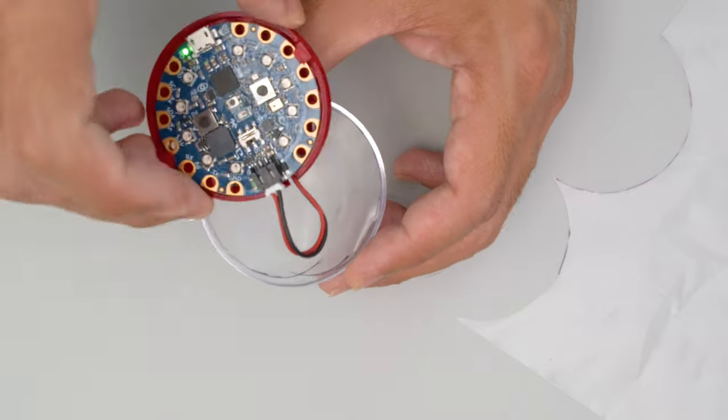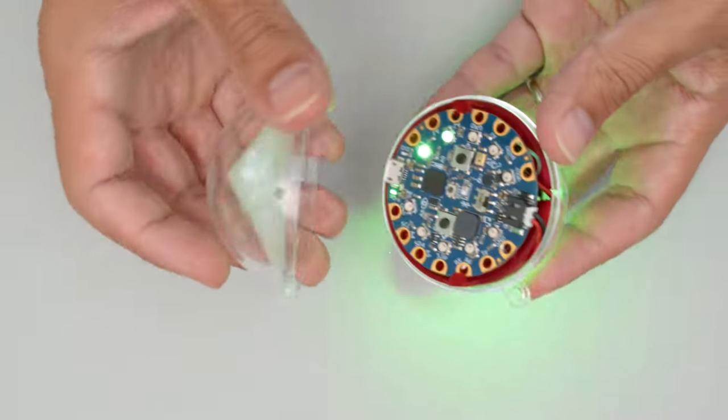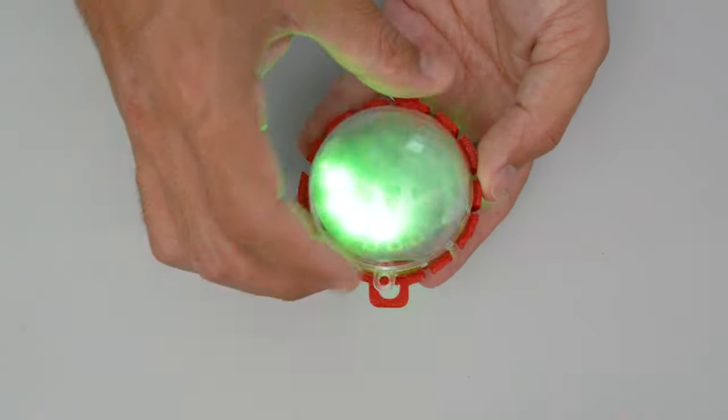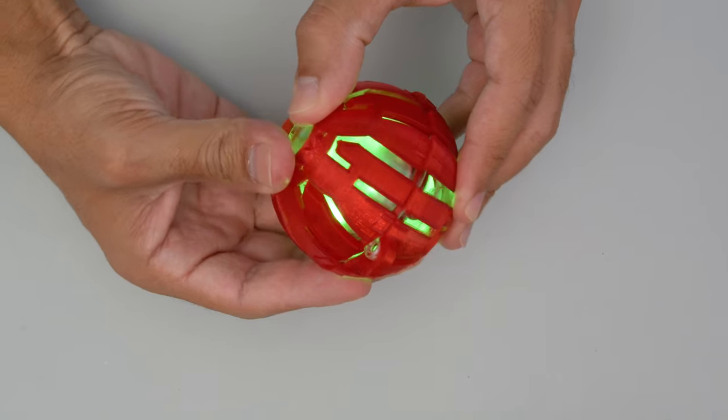Diffusion material like parchment paper is added to the DIY ornament so the NeoPixel LEDs are nicely diffused. The DIY ornament is fitted into the 3D printed halves and they both just snap fit together.